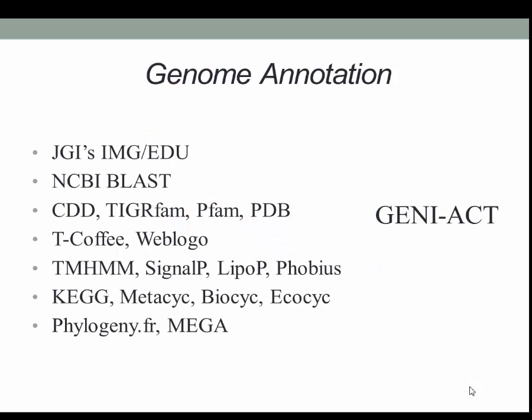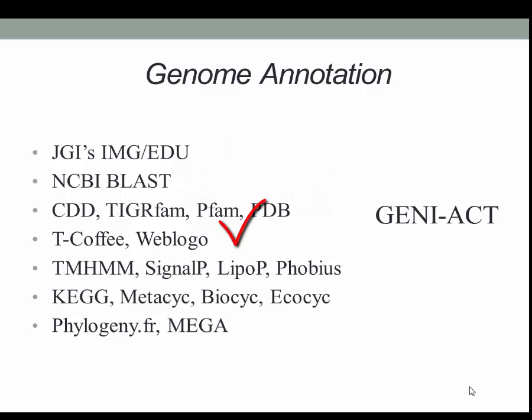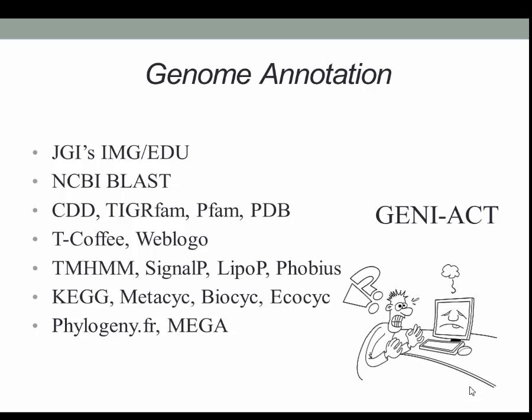What types of bioinformatics tools are used to annotate a gene? Often the same tools used in automated annotation: IMG-EDU, BLAST, CDD, TigerFAM, PFAM, PDB, TeaCoffee, WebLogo, and others. For most novice bioinformaticists, it's a daunting task to know which programs are appropriate for a specific project — and this list is just a small fraction of the many bioinformatics programs that are freely accessible online.